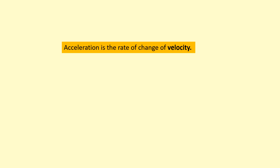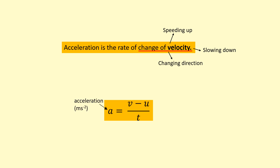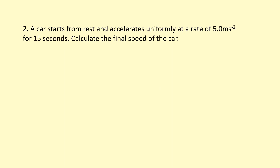If the object is speeding up, slowing down, or changing direction, you need to use acceleration. Acceleration is the rate of change of velocity. In this video we'll only look at speeding up and slowing down. The equation is: acceleration = change in velocity / change in time, or a = (v − u) / t, where v is the final velocity, u is the initial velocity, and a is measured in meters per second squared.